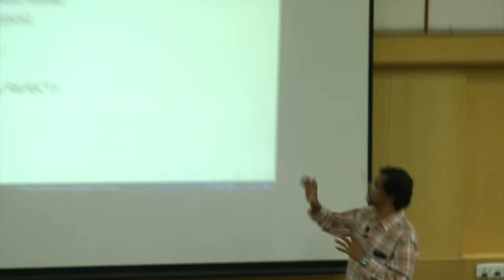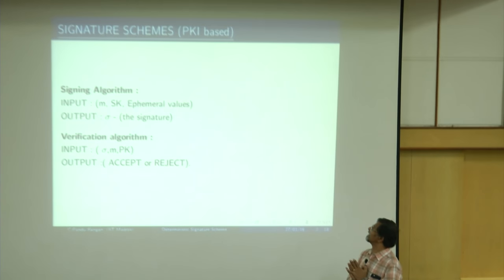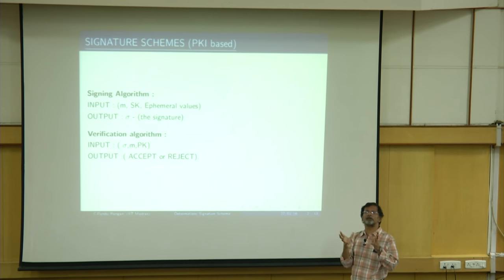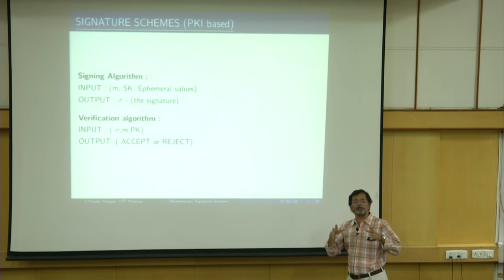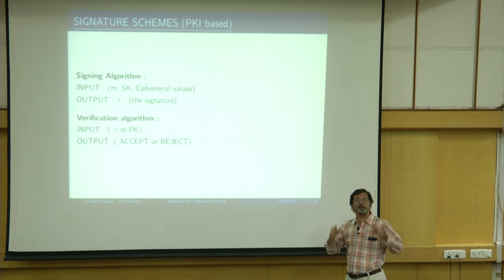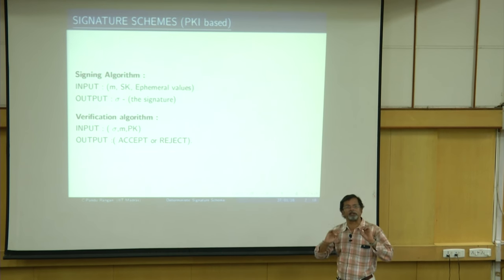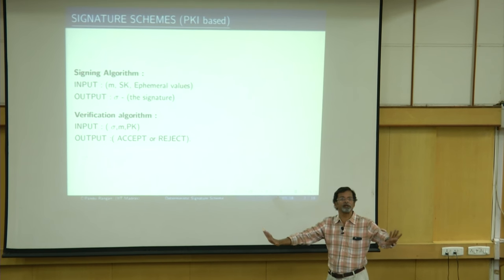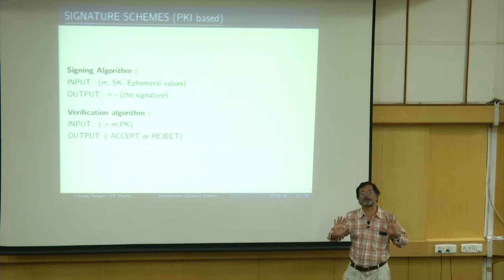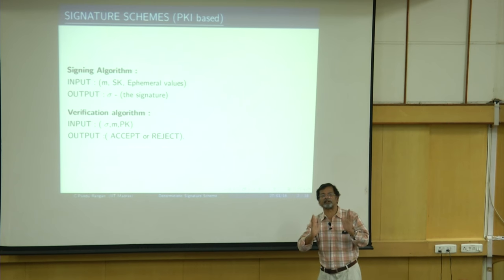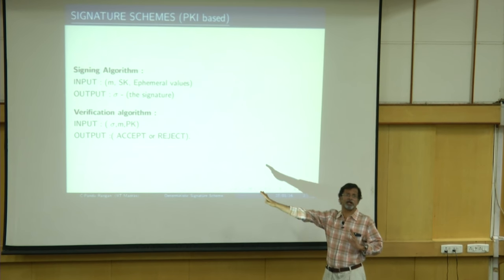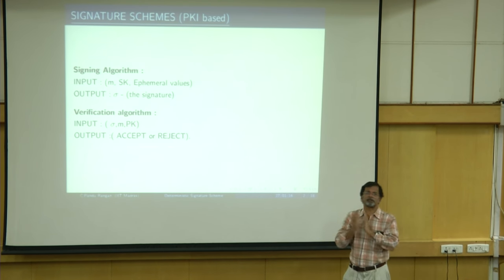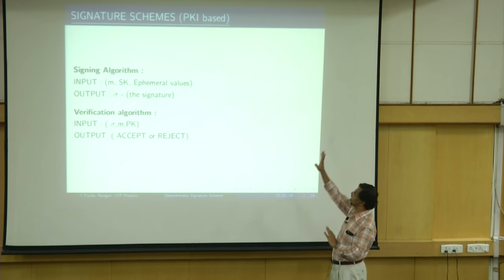A digital signature scheme consists of a signing algorithm and, as you can see in the slide, it is PKI-based. PKI means public key infrastructure. In a PKI-based system, every user is responsible for creating his own secret key and the public key. Nothing is done outside; it is done in his own backyard and then he creates the secret key and the public key.